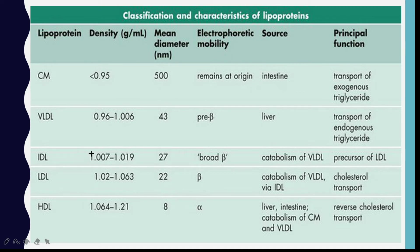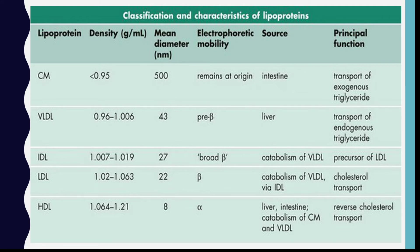IDL has a density of 1.007 to 1.019 and is called broad beta lipoprotein. It is formed from the catabolism of VLDL and acts as a precursor of LDL. LDL has a density of 1.02 to 1.063 and is called beta lipoprotein; it is formed from catabolism of VLDL via IDL and helps transport cholesterol. HDL has a density of 1.064 to 1.21 and is called alpha lipoprotein. Its source is liver and intestine, and it is also formed from catabolism of chylomicrons and VLDL, acting as a reverse cholesterol transporter.